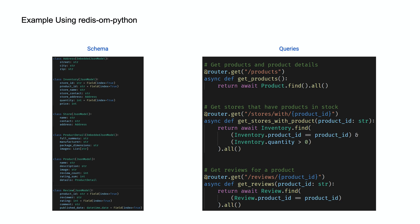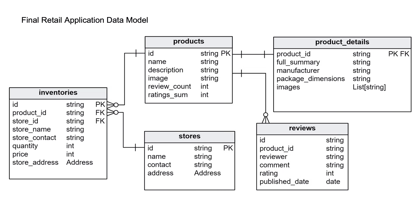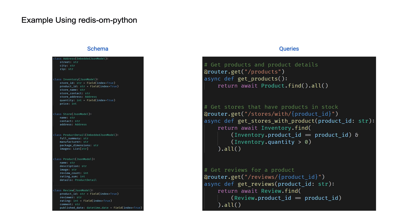Going back to the three big questions: to get products and product details with Redis-OM Python you just use your product model and find all of them. To get stores that have products in stock, query the inventory — which stores enough information including store name, address, contact, quantity, and price — filtering where product IDs match and quantity is greater than zero. Getting reviews for a product is as simple as querying the review model filtered by product ID.